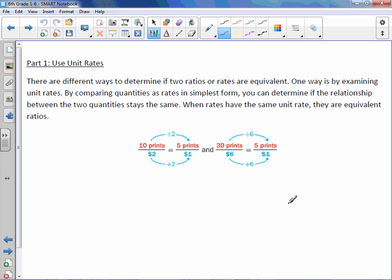Equivalent is a mathematical word for equal or the same. So if we look over here, 10 prints for $2, unit price or unit rate is 5 prints per dollar. And 30 prints for $6, the unit rate is also 5 prints per dollar, which means the two ratios of 10 and 2 and 30 and 6 are equivalent ratios.